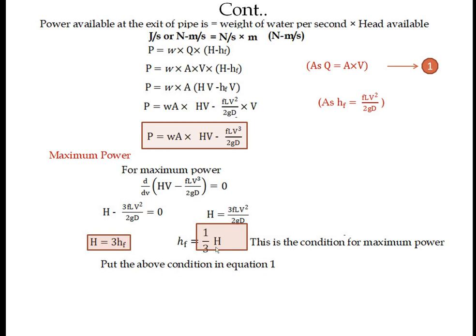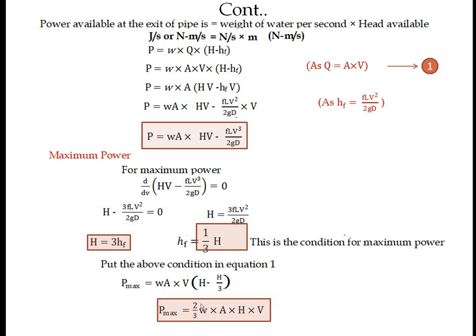Substituting the maximum power condition HF = H/3 into equation number one, the maximum power is: P_max = W·A·V·(H − H/3) = W·A·V·(2/3)·H. So the maximum power that can be transmitted from entrance to exit of the pipe is (2/3)·W·A·V·H.